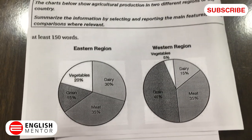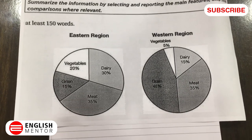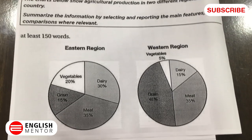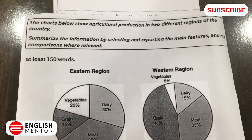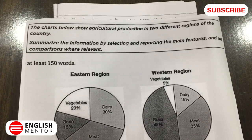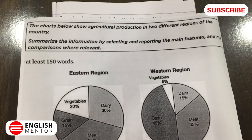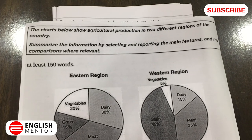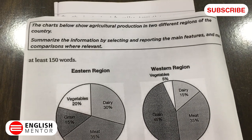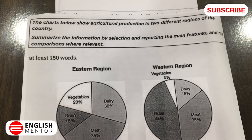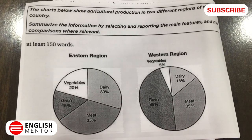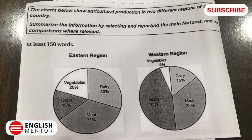We can either describe each pie chart separately or we can make comparisons. Reading the information first, we have been given the charts below, which show agricultural production in two different regions of the country. We must summarize the information by selecting and reporting the main features and make comparisons where relevant. This task has to be attempted in at least 20 minutes and must be at least 150 words.